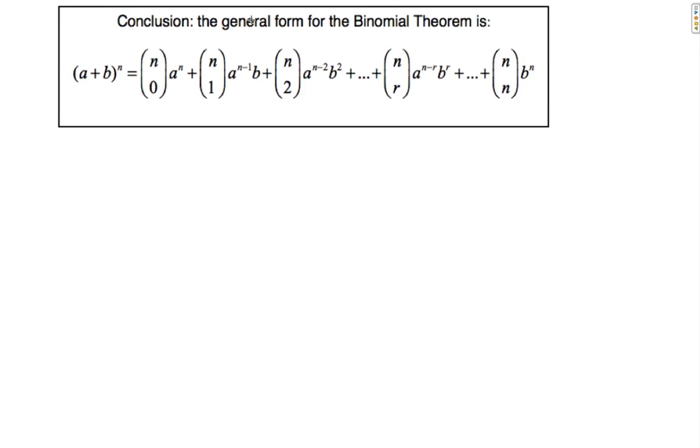So putting it all together, here's our general form of the binomial theorem. We have (a + b) to the power n, (n choose 0) a to the n, (n choose 1) a to the n minus 1 times b, all the way, considering the pattern of descending a powers, ascending b powers. That's right.